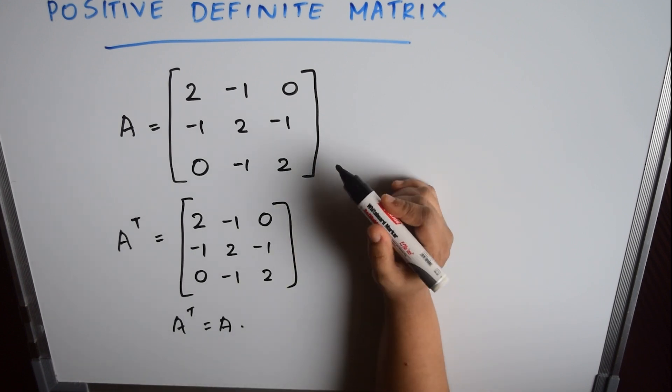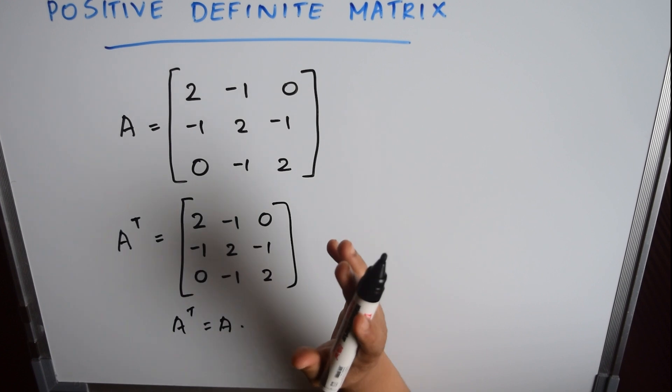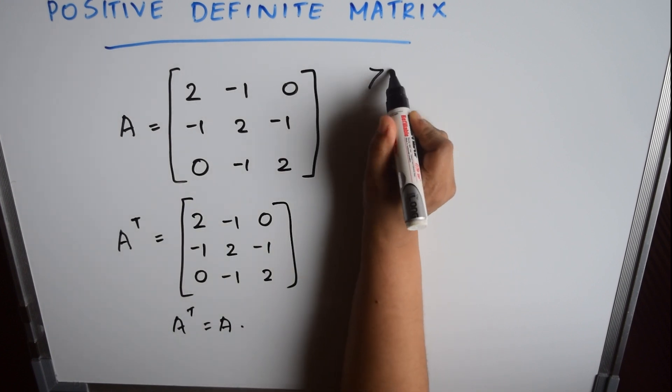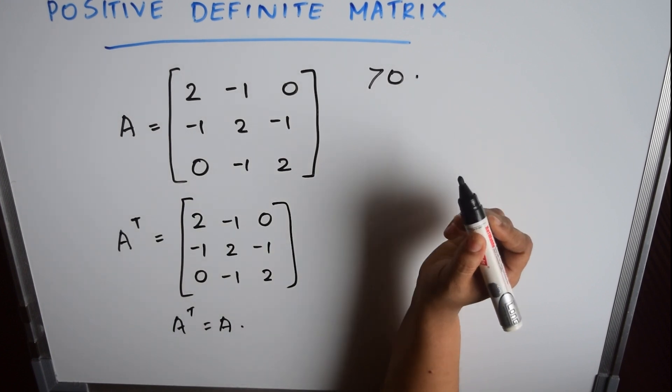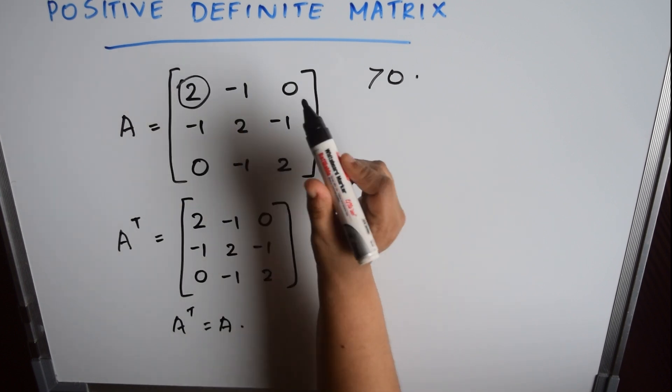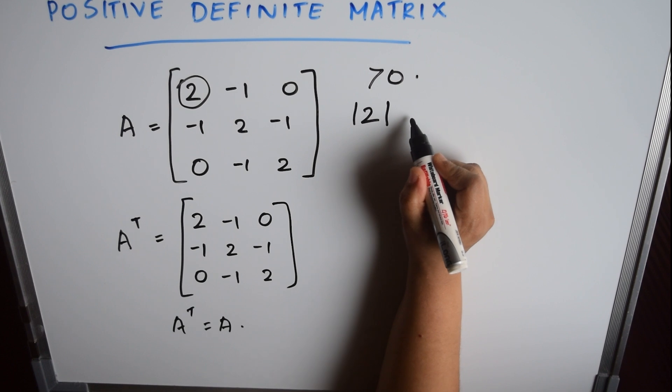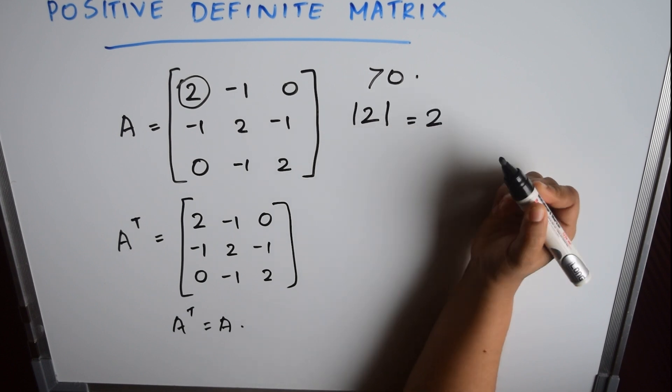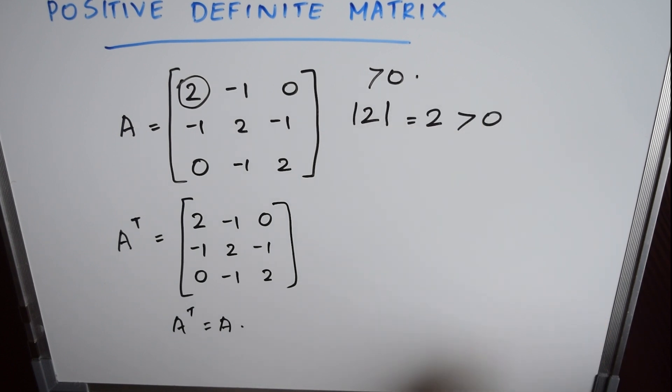Now for matrix A to be positive definite, all the upper left determinants must be greater than 0. So here, first consider the first upper left determinant, which is the determinant of 2, which equals 2. It is greater than 0.